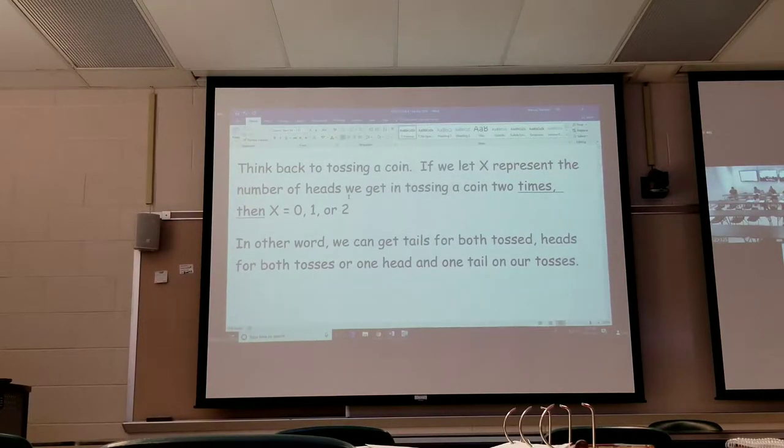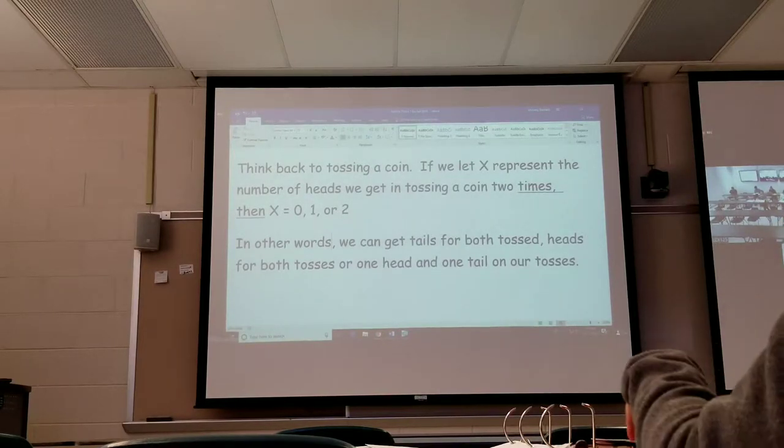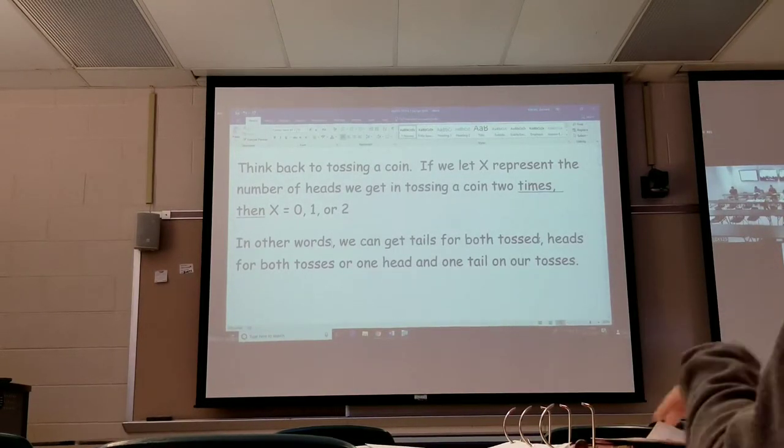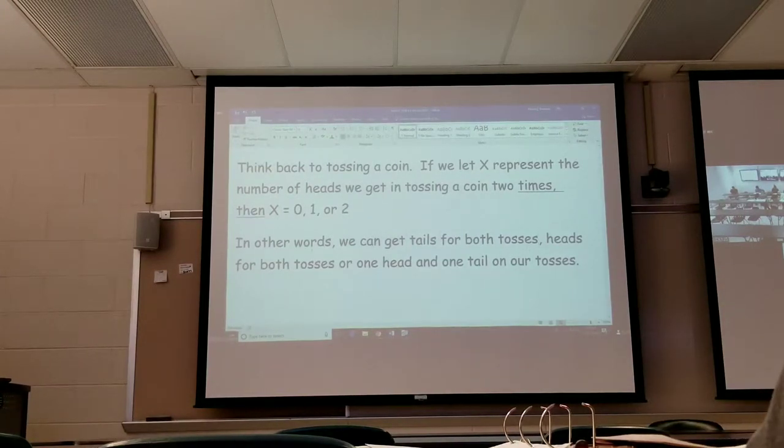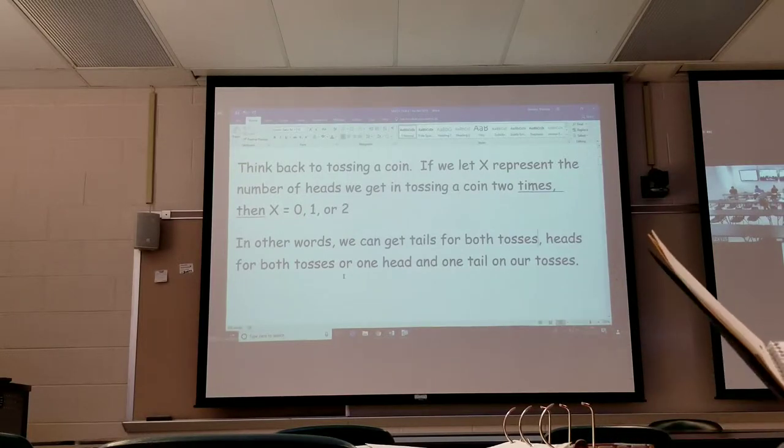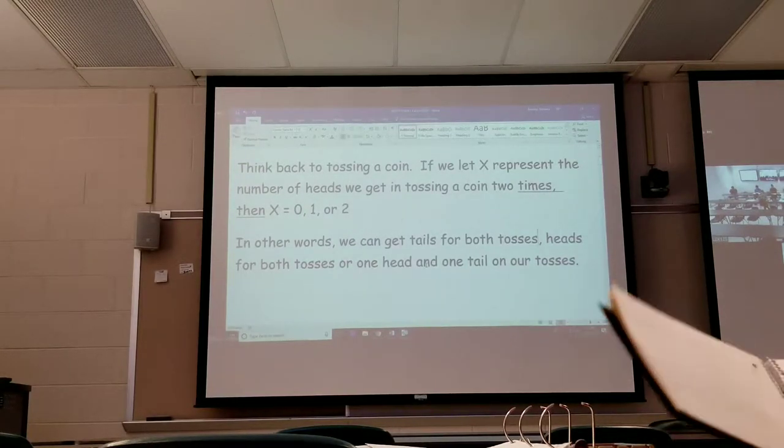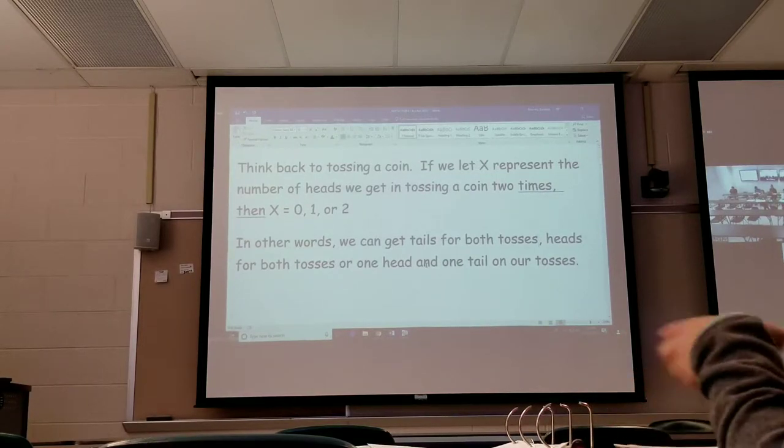It can be zero, one, or two. In other words, we can get tails for both flips, heads for both flips, or one head and one tail. So if you flip a coin, you can think of what might happen.